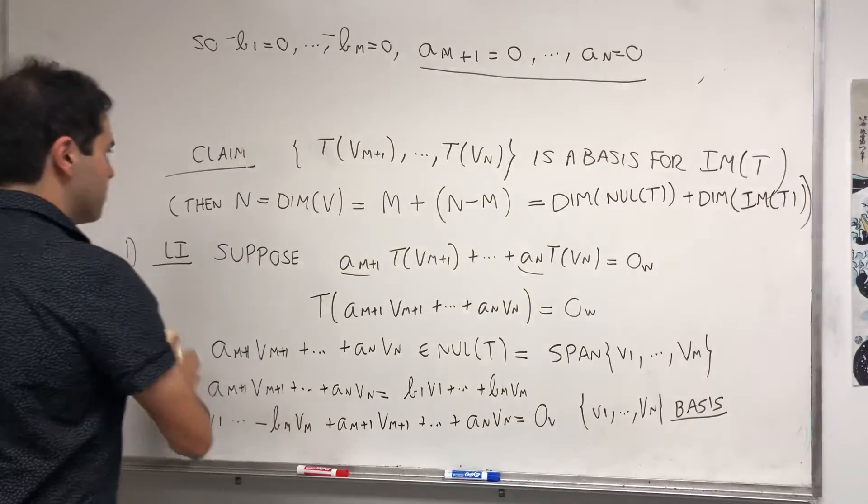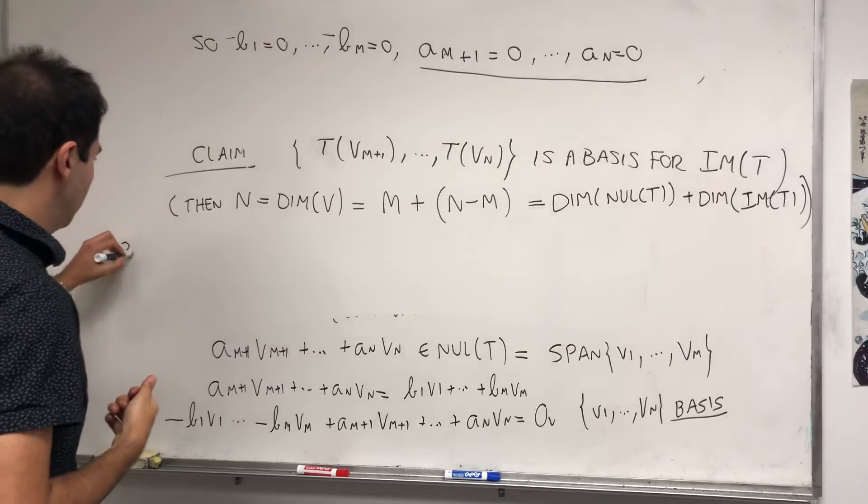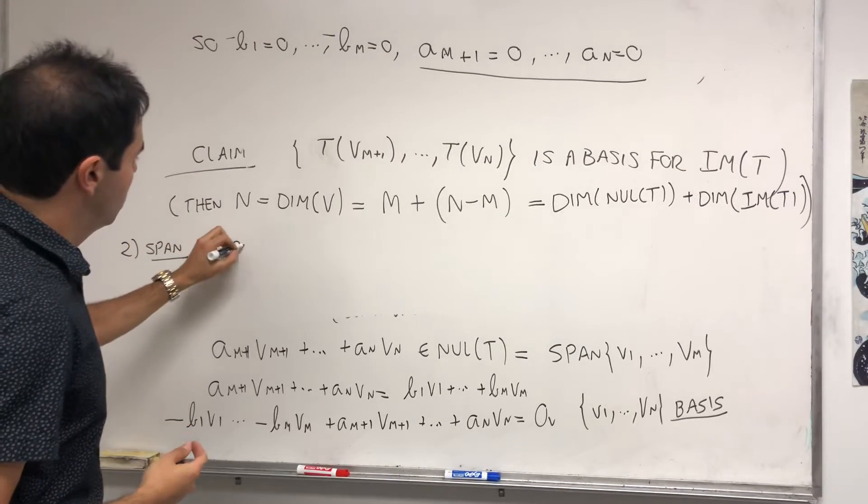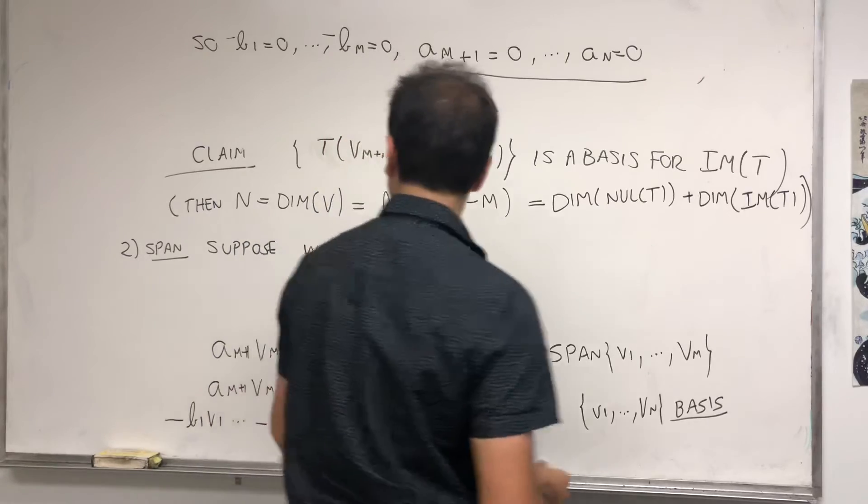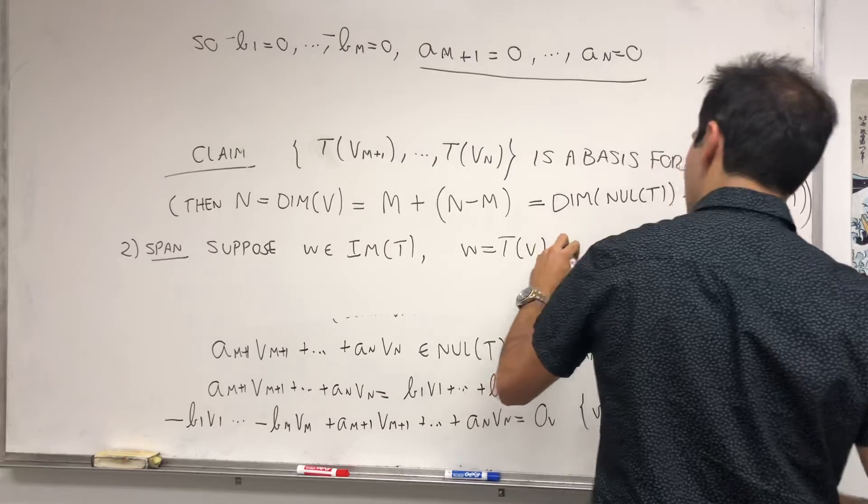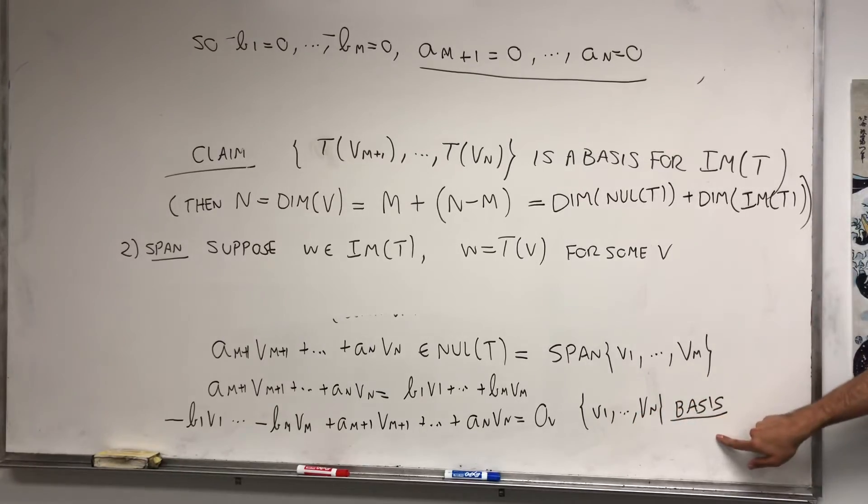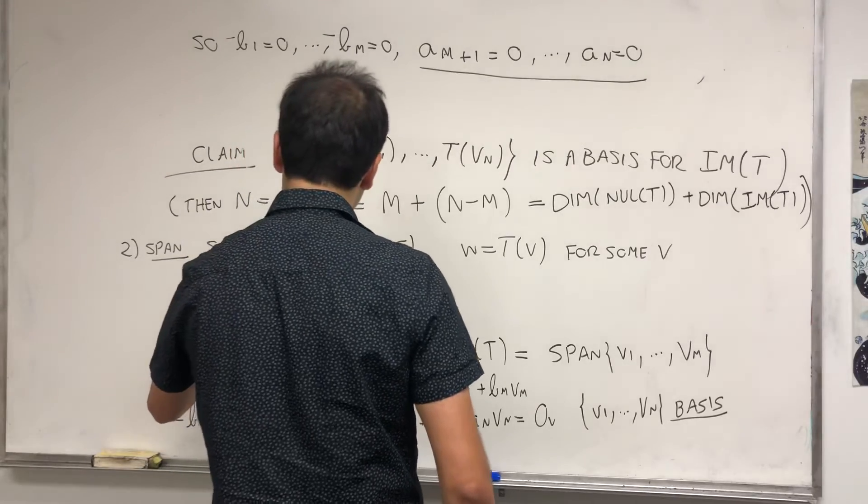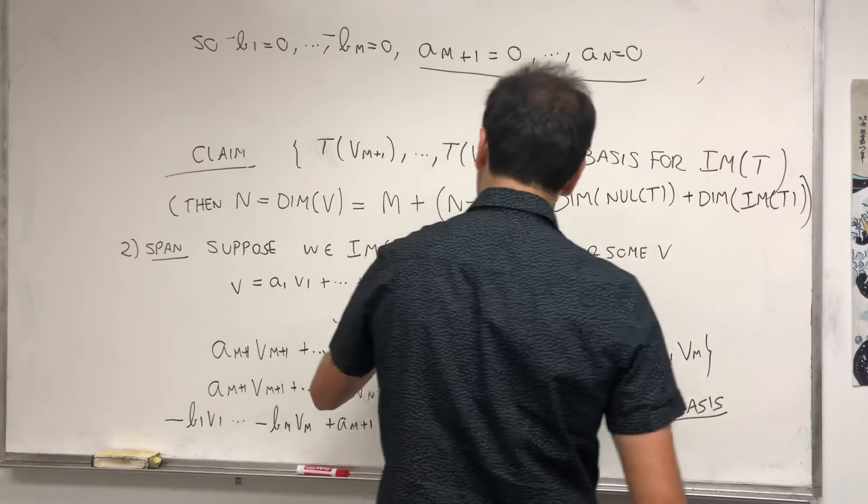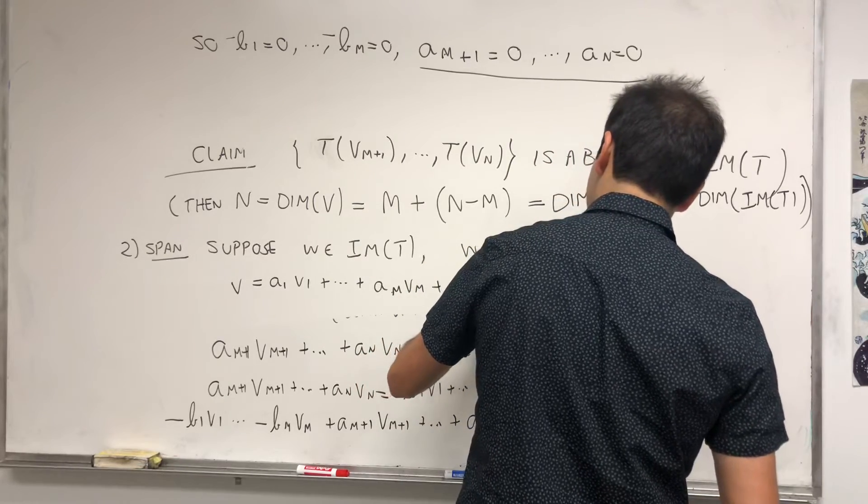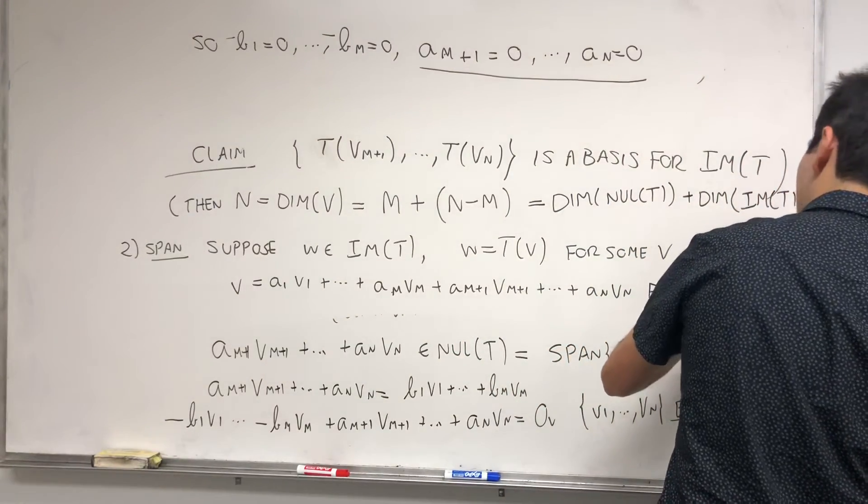Now let's show that it spans. Suppose W is in the image of T, which means that W is T(V) for some V. But now remember, this huge set is a basis. So V is just a linear combo of A1·V1 + ... + Am·Vm plus Am+1·Vm+1 + ... + An·Vn for some A1 up to An.